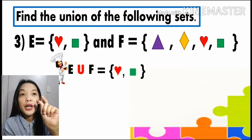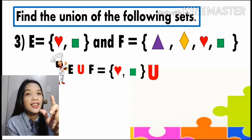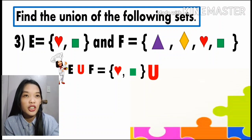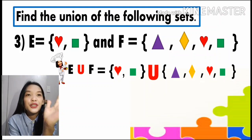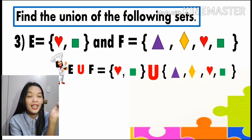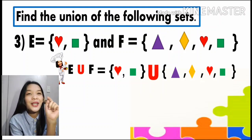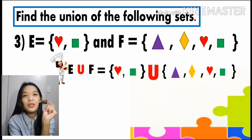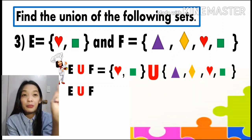Set E has heart and square, then the symbol for the union, then write again the elements of set F which are triangle, triangle, diamond, heart, and the square. Now observe carefully — are there common elements? That's correct, there are common elements: the heart and the square. Remember, if there are similar elements then we'll write them as one. Therefore E union F will be triangle, diamond, heart, and square.